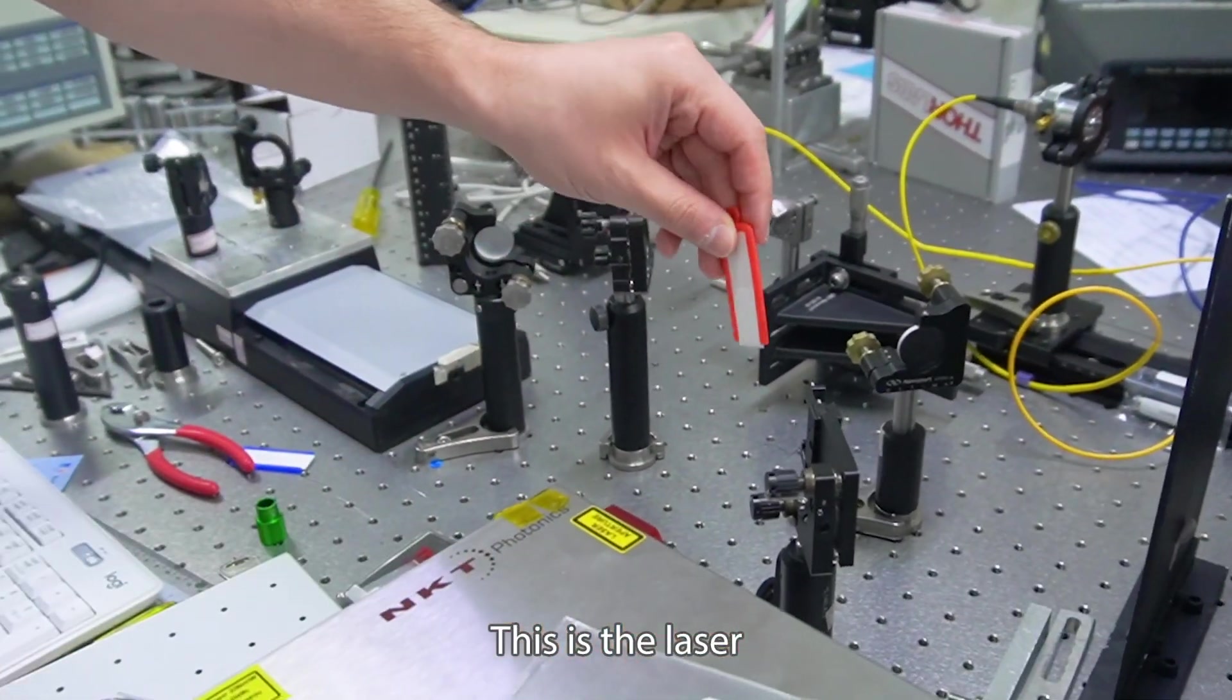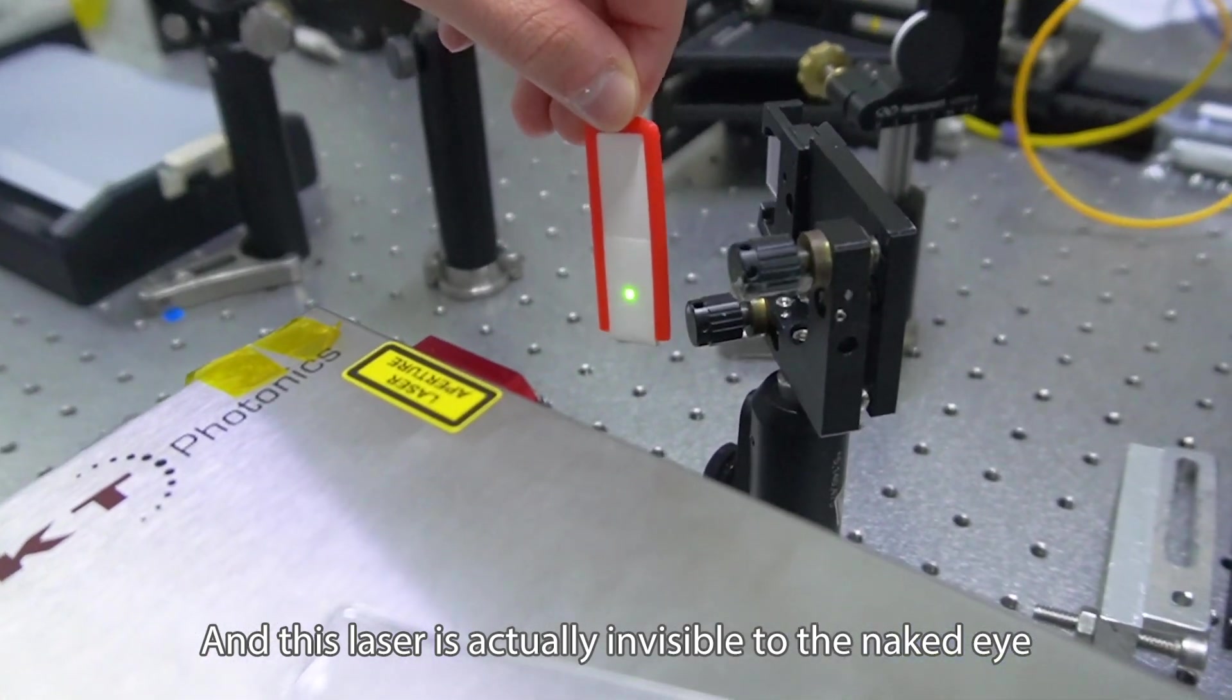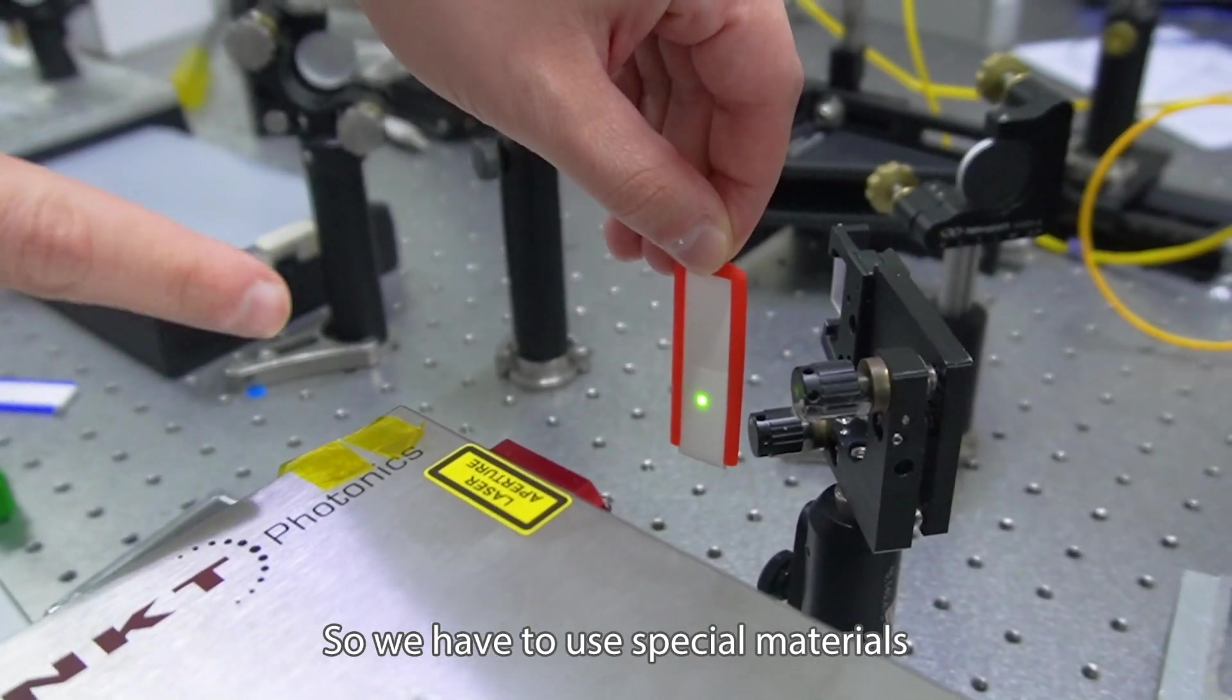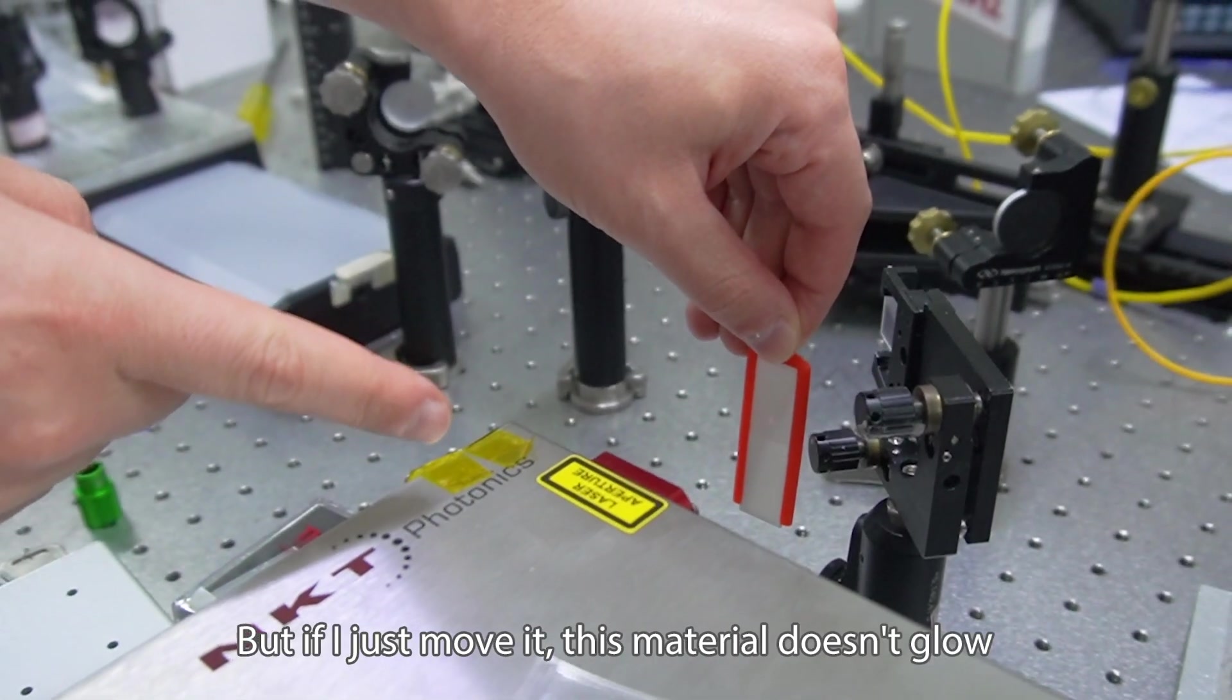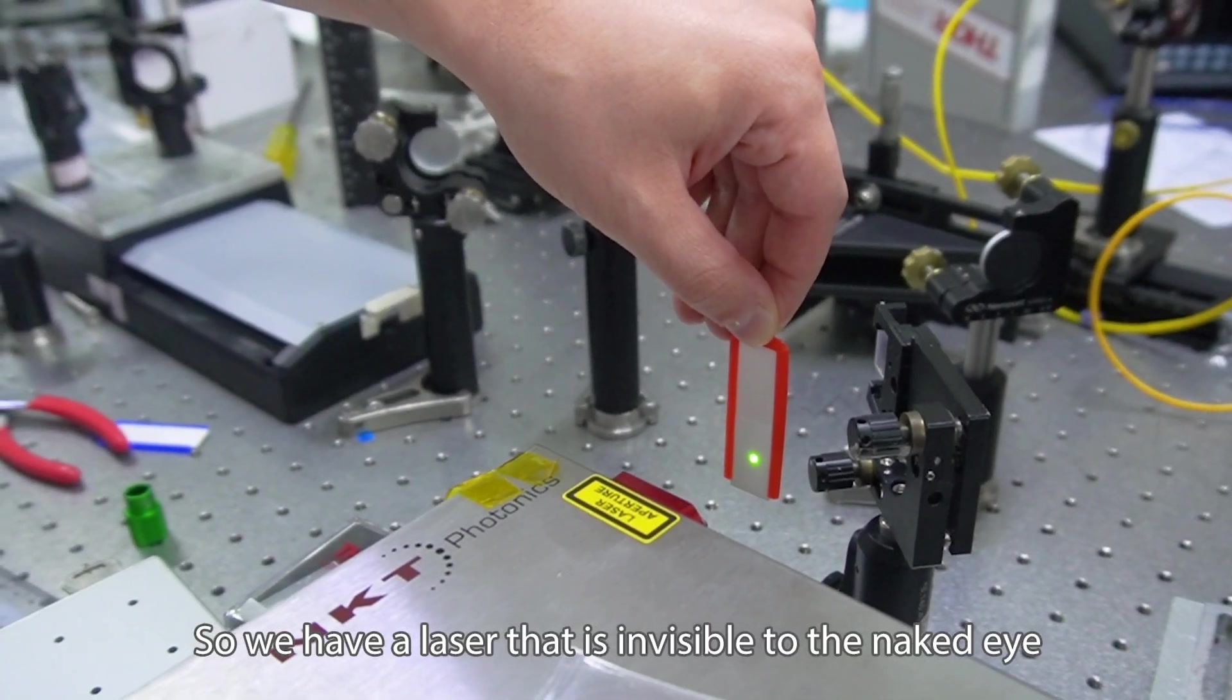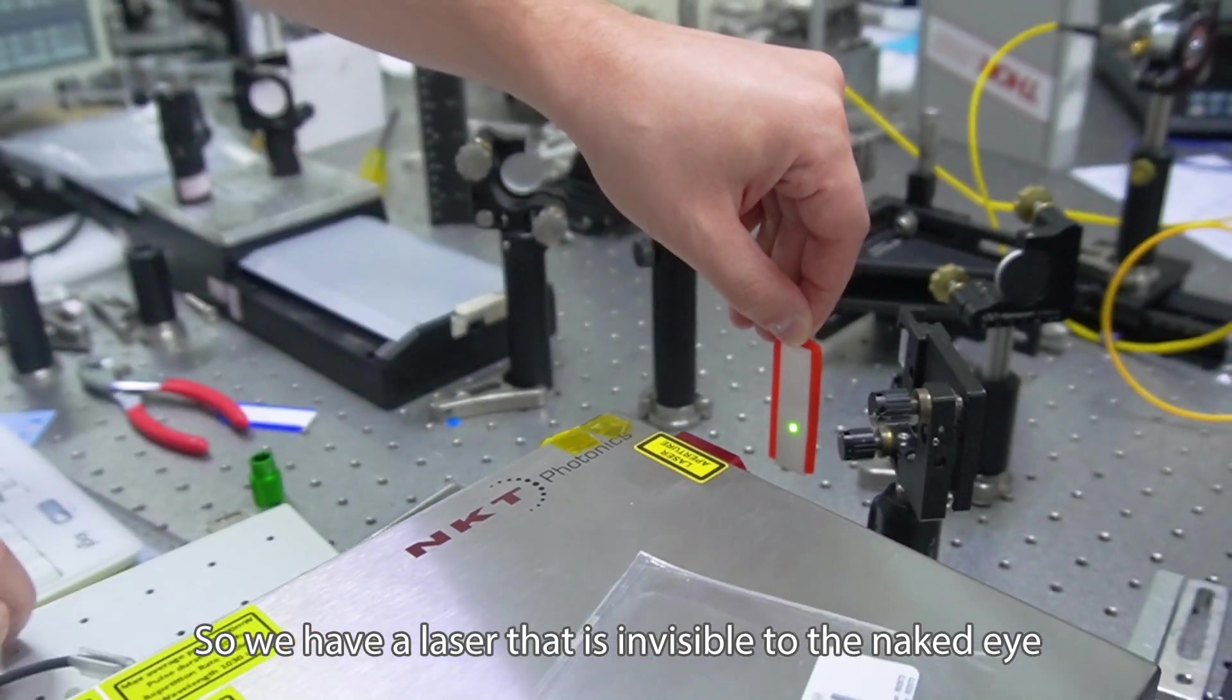This is the laser. This laser is actually invisible to the naked eye, so we have to use special materials. You can see the laser is there, but if I just move it, this material doesn't glow. So we have a laser that is invisible to the naked eye.